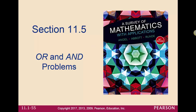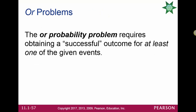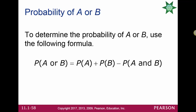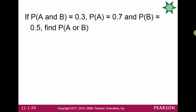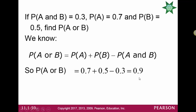The last section this week covers AND and OR problems in probability. The OR problem requires a successful outcome for at least one of the given events. The probability of A or B equals the probability of A plus the probability of B minus the probability that both occur. If the probability of A and B is 0.3, probability of A is 0.7, and probability of B is 0.5, then the probability of A or B is 0.7 + 0.5 − 0.3 = 0.9.